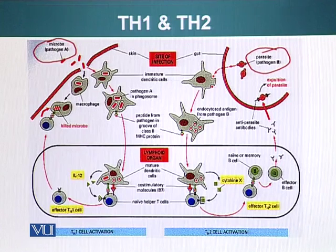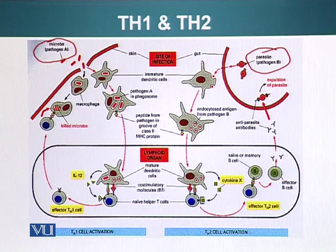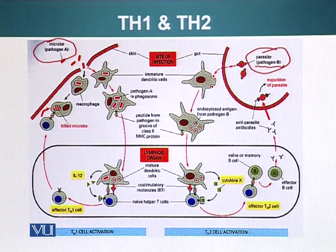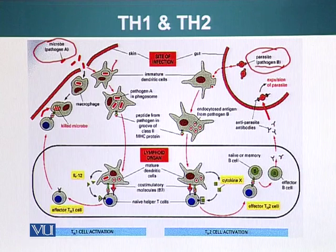Pathogen A has broken in through the skin, and pathogen B is present in the gut. Pathogen A, when it enters the body, will encounter the immature dendritic cells. These dendritic cells will engulf pathogen A by phagocytosis.